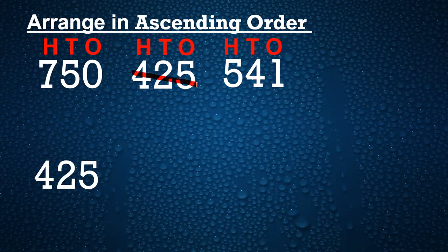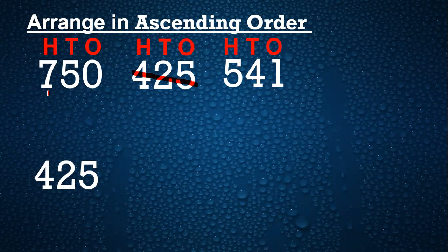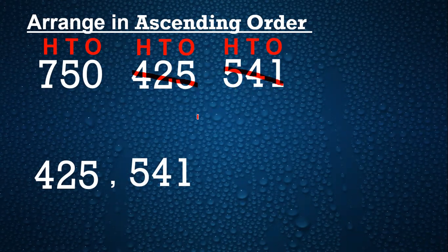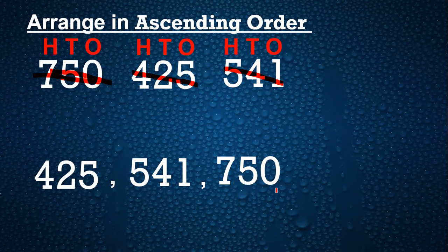So we finished writing 425, we'll cut this. Now what comes after 425? In the hundreds place we have 5 and 7. We are arranging from small to big, so the next smallest is 5. So 541 is the next smallest number. We'll write 541 and cut this. Now what we have left is 750. So after 541 will come 750. We'll write 750 and cut this. So we arranged the numbers from small to big: 425, 541, and 750. They are arranged in ascending order correctly.